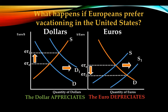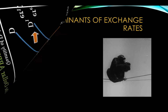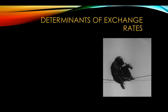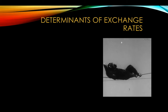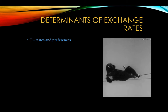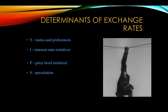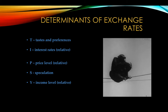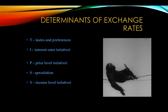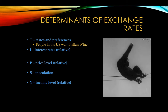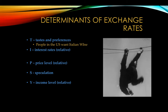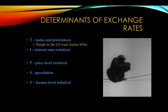Once you work your way through it, I think you'll see you've got this. So now let's look at what determines exchange rates. Our acronym is TIPSY — and there's a tipsy chimpanzee to help you remember. We have: Tastes and preferences, Interest rates relative to each other, Price level relative to each country, Speculation, and relative Income levels. It spells out TIPSY. So for tastes and preferences — Europeans have a preference to come to the United States, people in the U.S. want to buy Italian wine — so we would demand their currency.